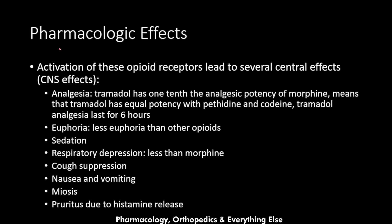When tramadol activates opioid receptors, it leads to several central effects. It produces analgesia at one-tenth the potency of morphine, making it equivalent in potency to pethidine and codeine. The analgesia lasts for six hours. Tramadol also produces euphoria, a pleasant sensation, but less so than other opioids, which is why it is less addictive.